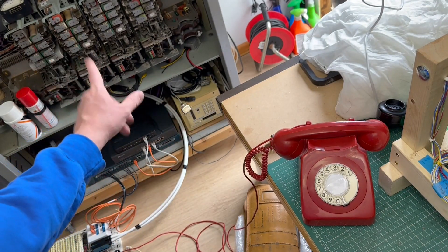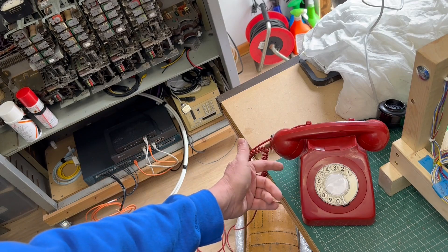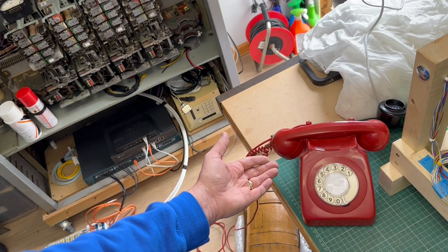I'm currently working on the tie lines between the phone exchange and the Cisco router. For testing purposes I've hooked up this red phone and I can show you what a tie line call would look like.